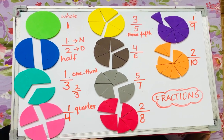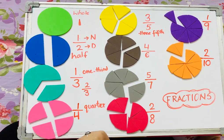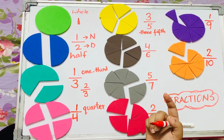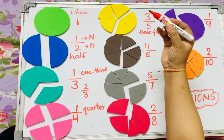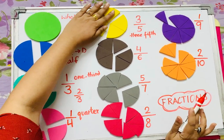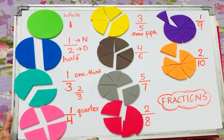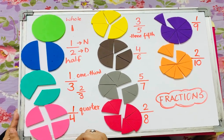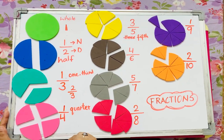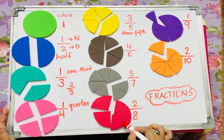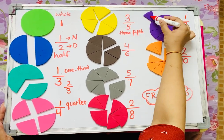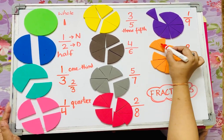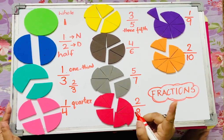Wow! Your fractions are really clear to you. Let's see if you can understand the rest of the examples on your own. Why don't you try to observe and solve how the fraction of the yellow circle is three by five, or answer why the fraction of the orange circle is two by ten? I'm sure you will get your answers.